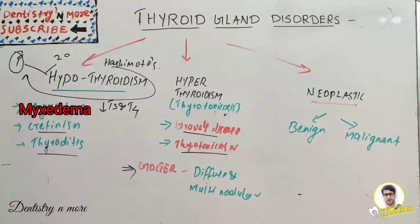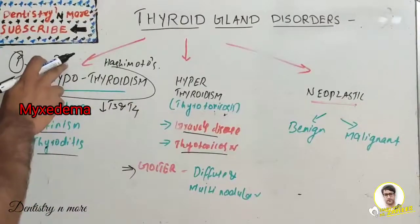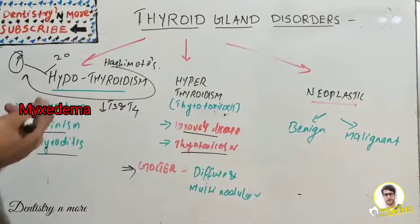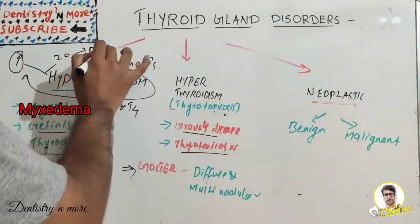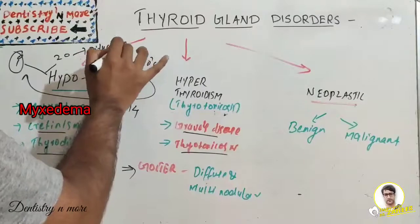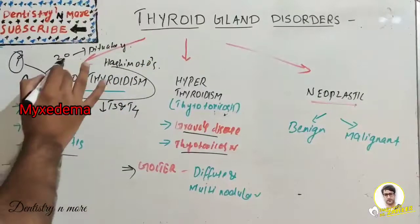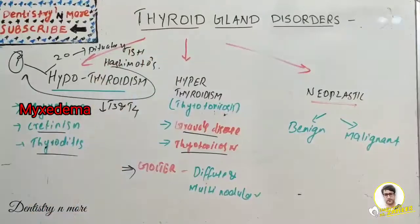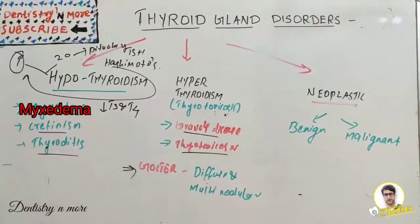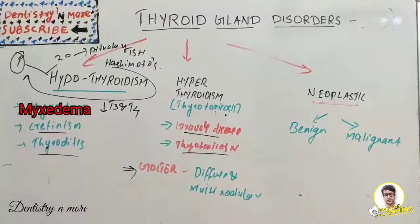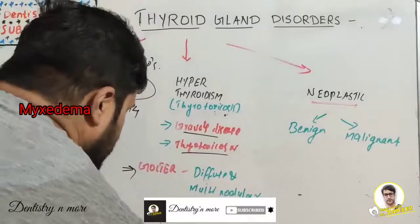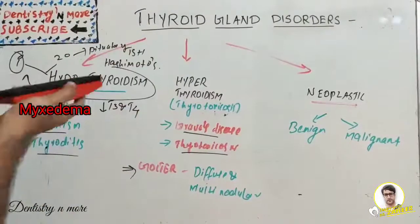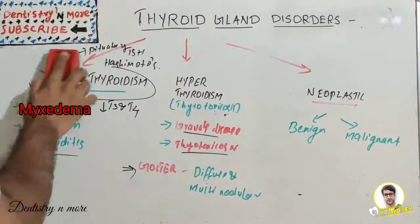Secondary reasons include pituitary gland destruction, isolated TSH (thyroid stimulating hormone) deficiency, or hypothalamic disorders. Those are all the primary and secondary reasons for hypothyroidism.